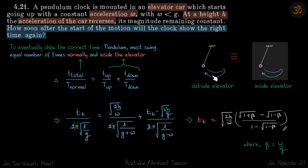Let's imagine two clocks, one is outside the elevator and one is inside the elevator. In order for both clocks to show the same time later, the number of cycles the pendulum must have swung in both cases must be the same. To eventually show the correct time, the pendulum must swing equal number of times normally and inside the elevator.